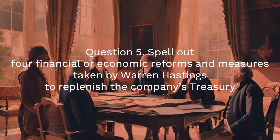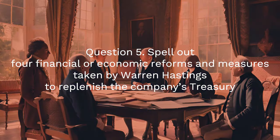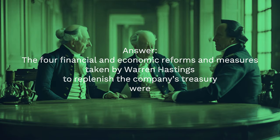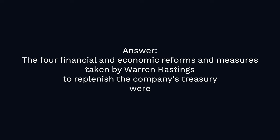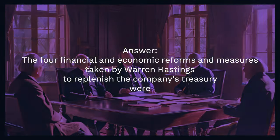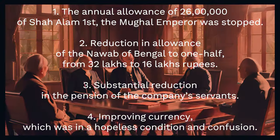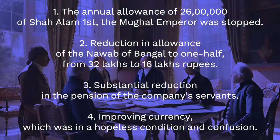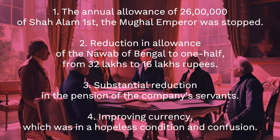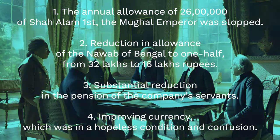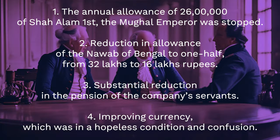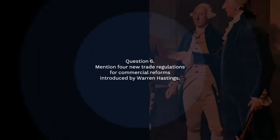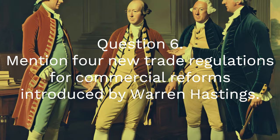Question 5: Spell out four financial or economic reforms and measures taken by Warren Hastings to replenish the company's treasury. Answer: The four financial and economic reforms taken by Warren Hastings were: one, the annual allowance of 26 lakhs of Shah Alam I, the Mughal Emperor, was stopped; two, reduction in allowance of the Nawab of Bengal to one half, from 32 lakhs to 16 lakhs rupees; three, substantial reduction in the pension of the company's servants; four, improving currency which was in a hopeless condition and confusion.